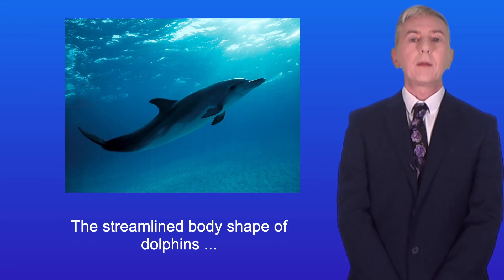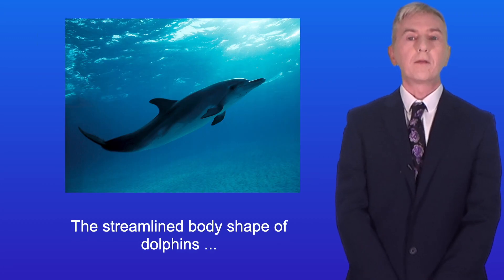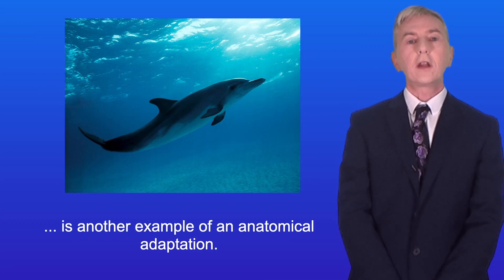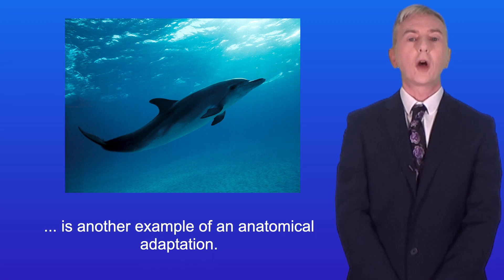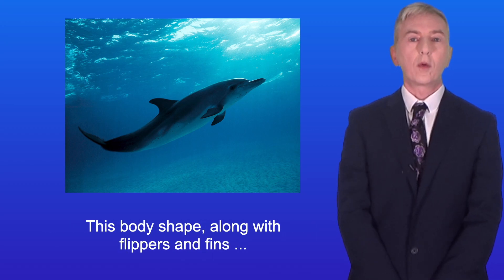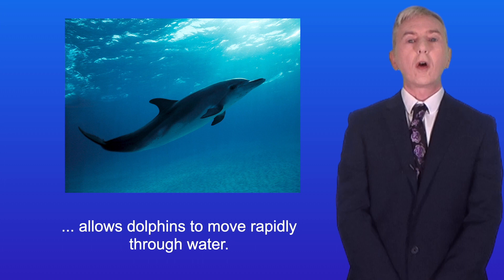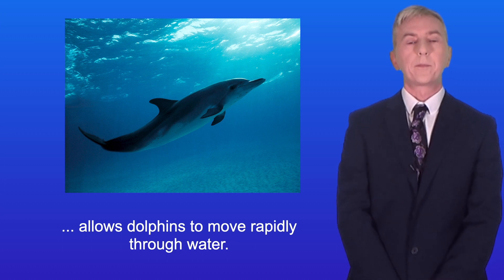The streamlined body shape of dolphins is another example of an anatomical adaptation. This body shape, along with flippers and fins, allows dolphins to move rapidly through water.